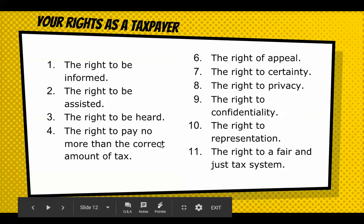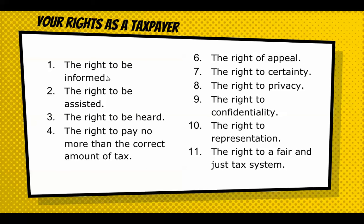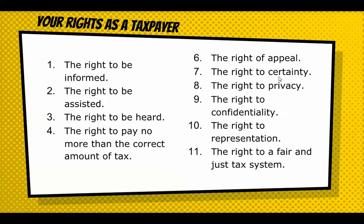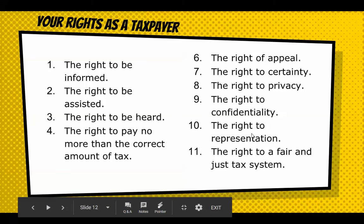Here are your rights — what the government should do for you. You should be informed about the tax system and what taxes you owe and when. You should get help if you need it, be heard if you have a complaint, and pay no more than the correct amount. You have the right to appeal, to privacy and confidentiality, to representation — hiring a lawyer to fight your taxes — and to a fair and just tax system.